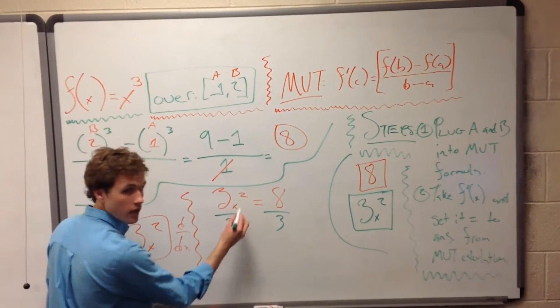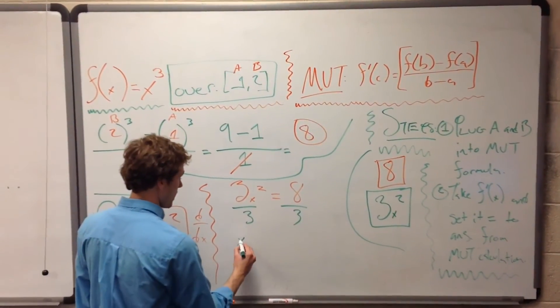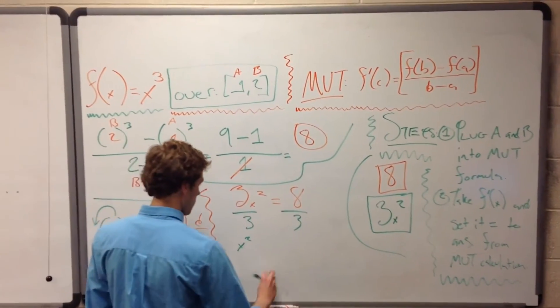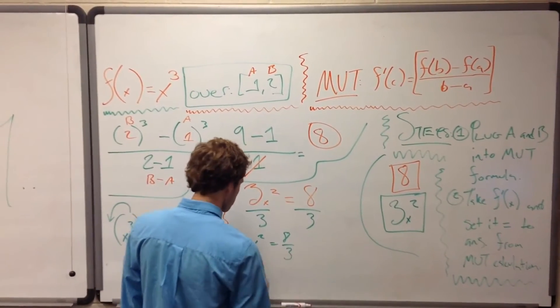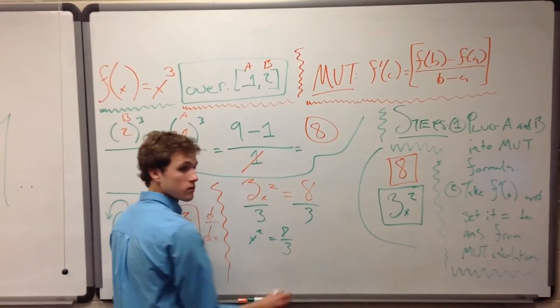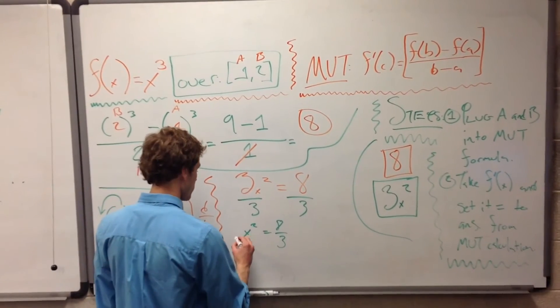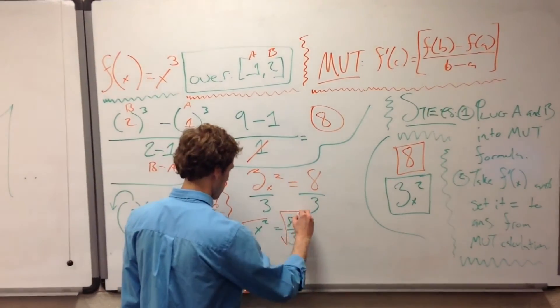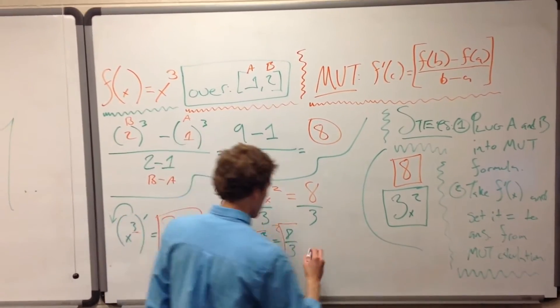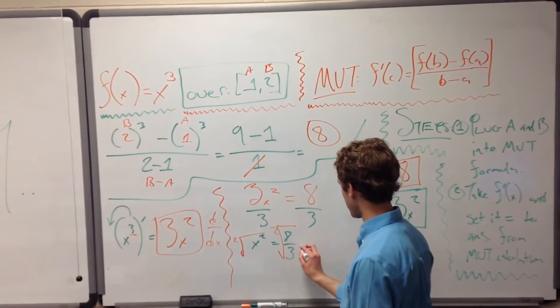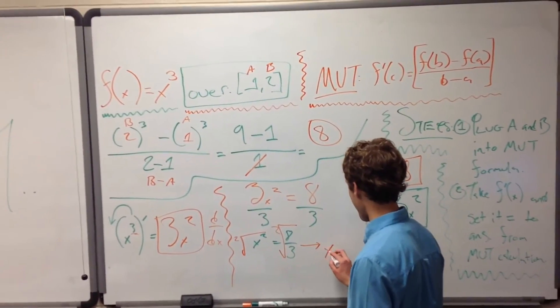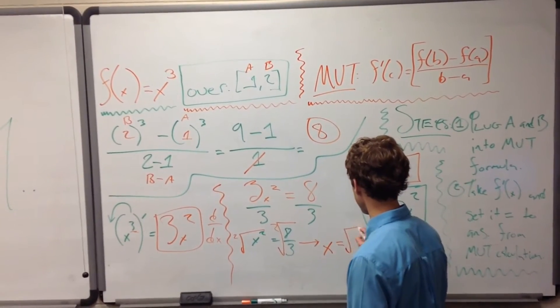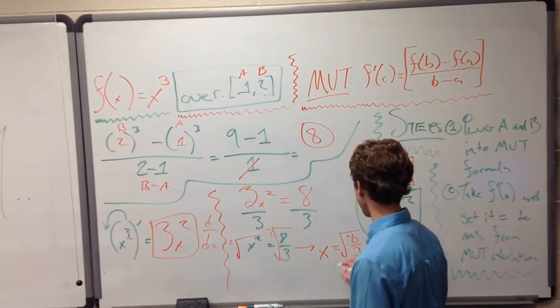This is going to give us a nice clean x² over here, equals 8/3. Now the obvious next step is we're going to take the square root of both sides. This is just going to leave us with x = √(8/3).